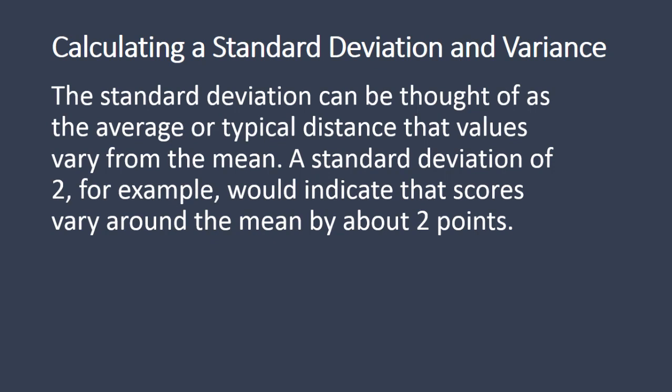A standard deviation of 2, for example, would indicate that scores vary around the mean by about 2 points. So if we had a standard deviation of 2, that would mean that some values were further than 2 points away from the mean, and some values were closer than 2 points. But loosely speaking, the average distance was about 2 points from the mean — some are a little more, some are a little less, but sort of an average distance is about 2 points. That's what we're getting at with the standard deviation.